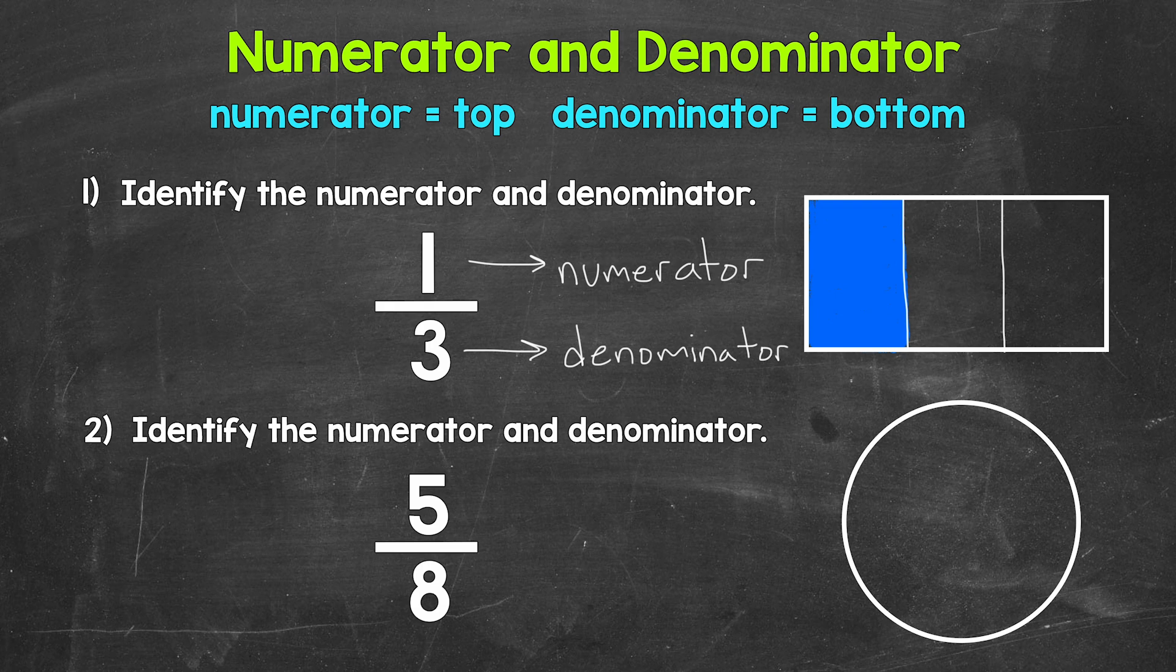5 is the top number of the fraction, so that's the numerator. And then 8 is the bottom number of the fraction, so that is the denominator.